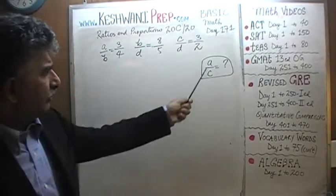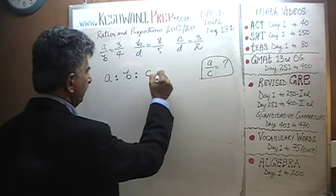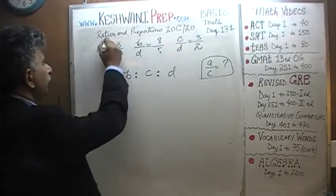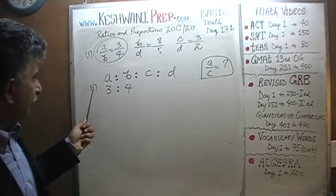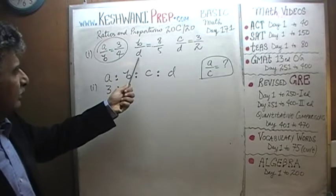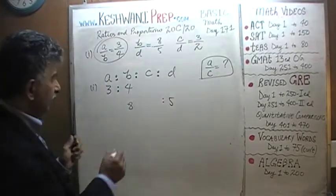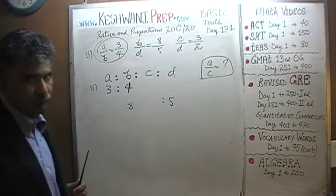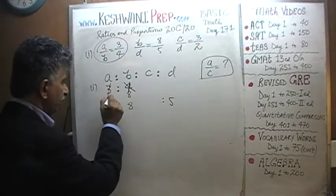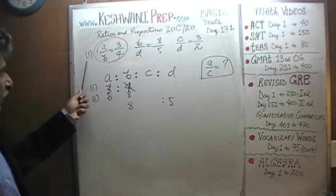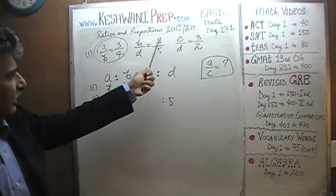Instead of looking for the ratio of A to C, we're just going to look for all the ratios together: A to B to C to D. A to B is 3 to 4 — that's ratio number 1. B to D is 8 to 5. Right here we have 4 and here we have 8 — that won't do. We need to convert that 4 into an 8, so multiply it by 2 to make it 8. If you multiply that by 2, we go back and multiply the 3 by 2 — it becomes 6. So ratio of A to B, 3 to 4, is the same as 6 to 8. Now we have our 8 and this is 8 to 5 — ratio number 2 is done.